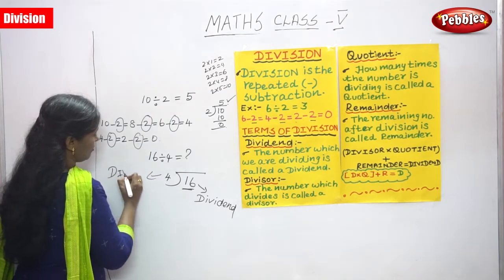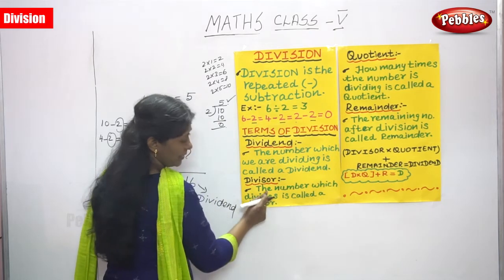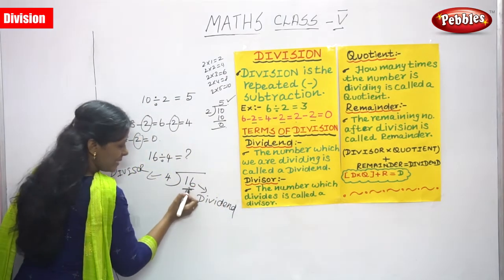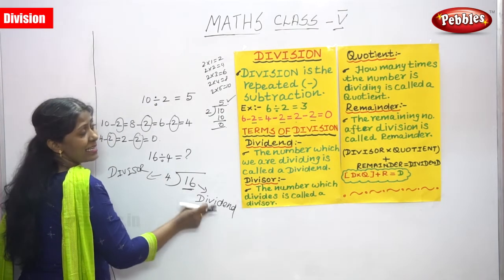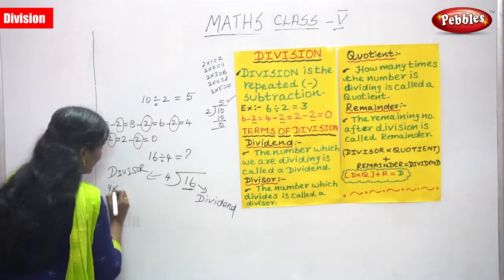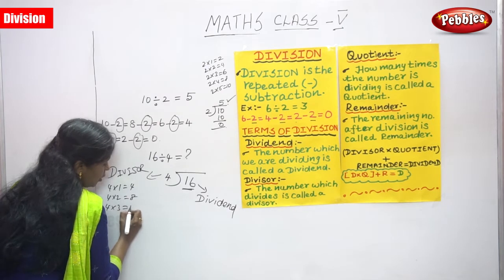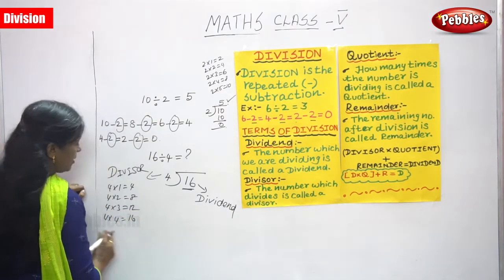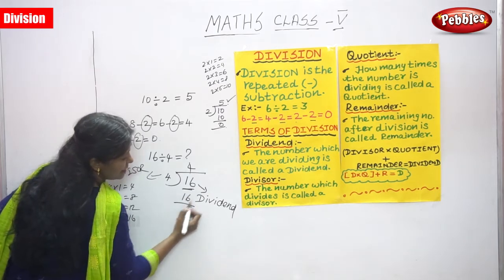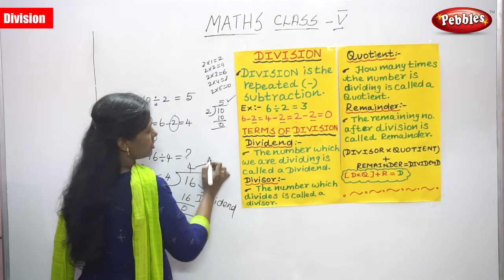The number which divides is called a divisor. We are going to divide 16 by 4. So we have to say the 4 times table: 4 into 1 is 4, 4 into 2 is 8, 4 into 3 is 12, 4 into 4 is 16. So how many times does it come? 4 times. So 4 into 4, the answer is 16. 16 minus 16, you get 0. You must write 4 on the top — this is called the quotient.